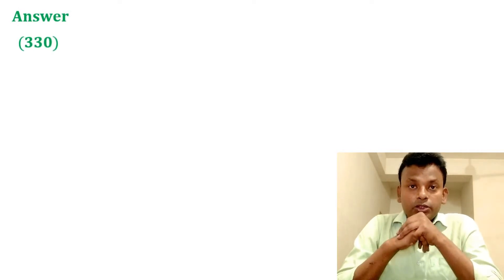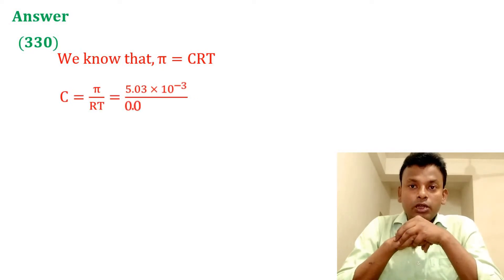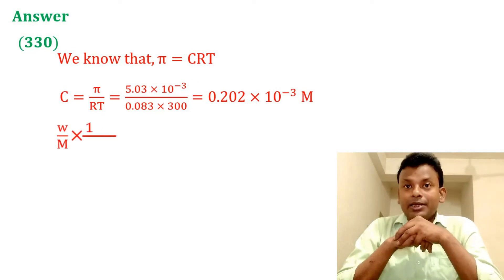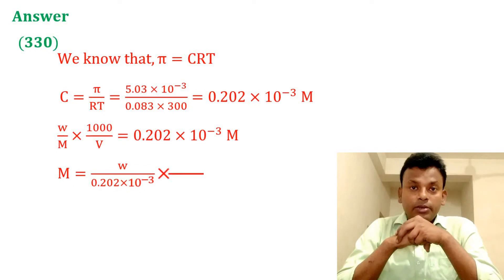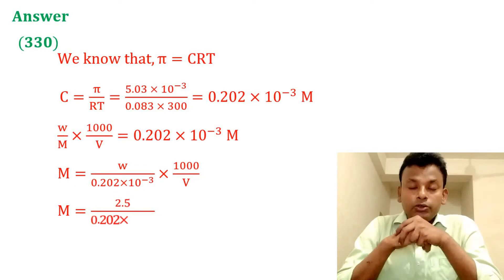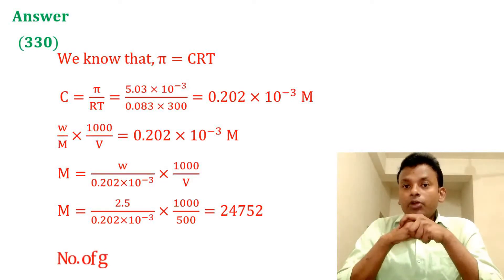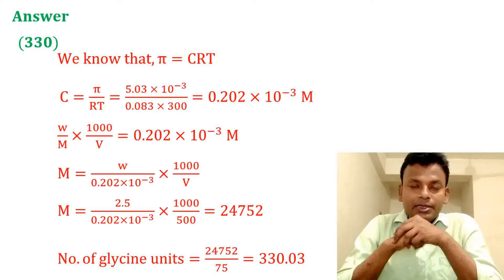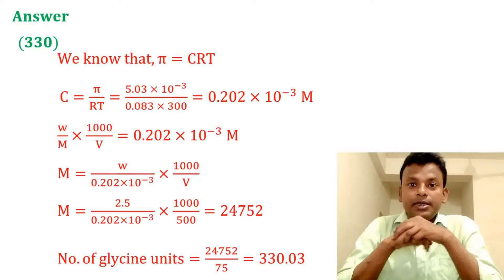Answer is 330. Using π = CRT, C = π/RT. Putting in all values, concentration C = 0.202 × 10⁻³ molar. Using C = (w/M) × (1000/V), molar mass equals 24752 gram per mole. Number of glycine units = 24752/75 ≈ 330. Answer is 330.